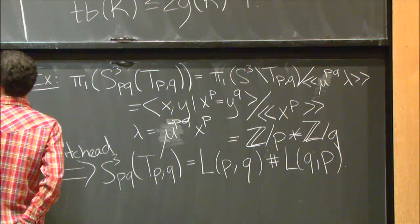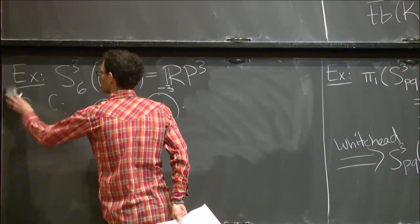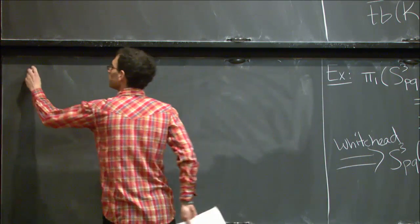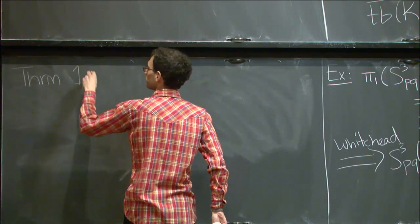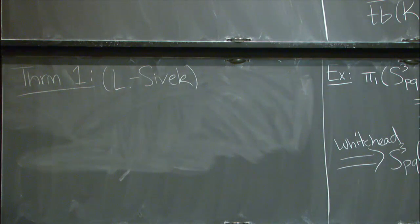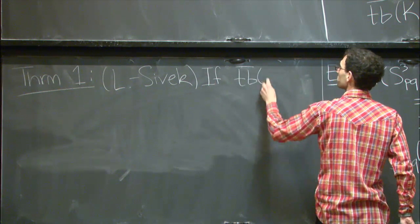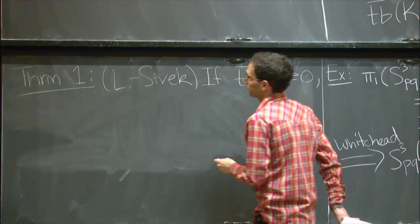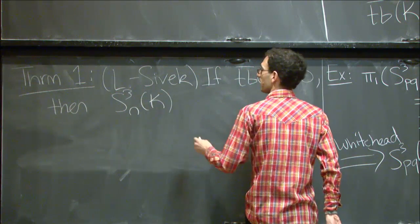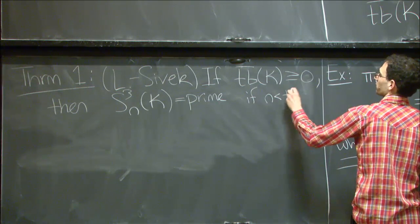Let's now obstruct some reducible surgeries. The first result—again joint with Steven Sivak—tells us something about surgery coefficients relative to the Thurston-Bennequin number. Suppose a knot has maximal Thurston-Bennequin number at least 0. Then any surgery on our knot is prime, as long as the surgery coefficient is less than this maximal Thurston-Bennequin number.